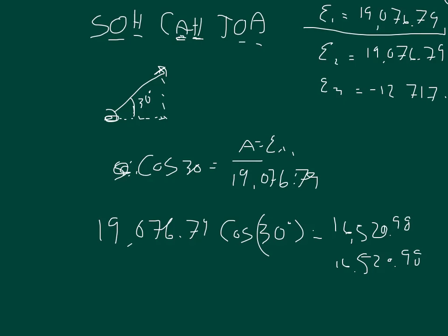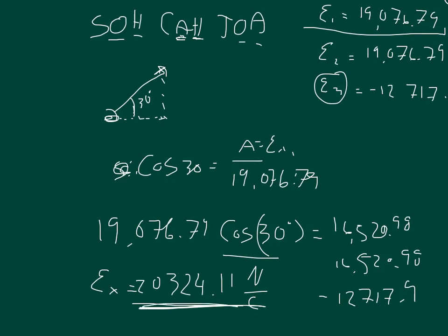And then Ex3, it only has an x component, so you don't have to multiply it by anything. You just have to figure out what E3 is, and that gives you the Ex3. E3 is a negative 12,717.9. When you add all of those together, the Ex is equal to 20,324.11 newtons per coulomb. So this is actually the number you put into the first blank. It is the magnitude of the electric field at point P in the x direction, which is what i hat represents.